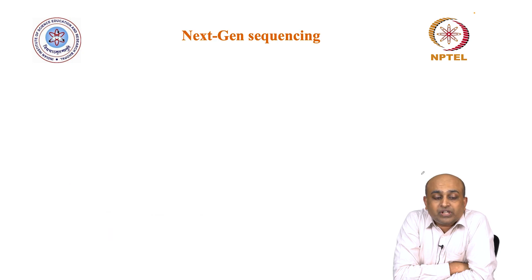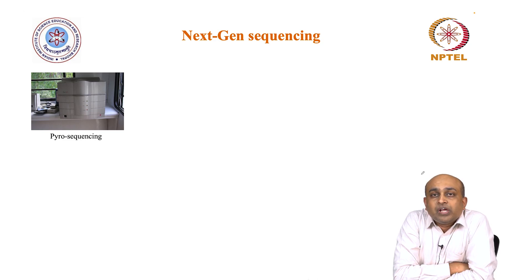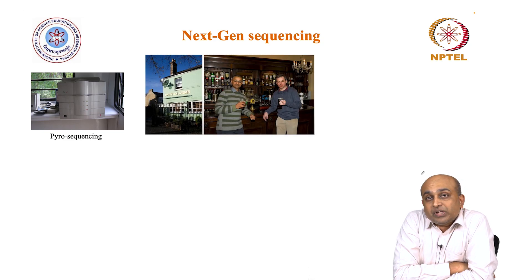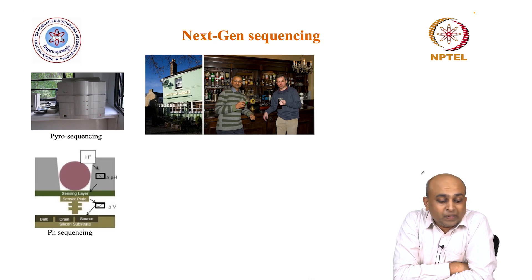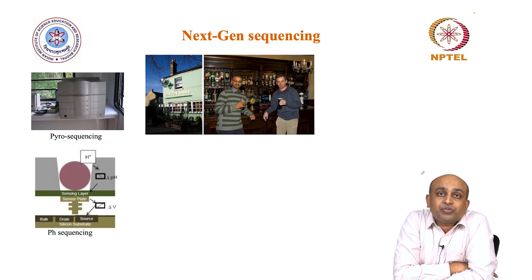Then we will get into some details of next-gen sequencing. We will look at pyrosequencing — what sequencing chemistry is involved — and how this changed in subsequent sequencing platforms. For example, how Illumina sequencing came together and how its chemistry was figured out. Then we will look at pH sequencing or Ion Torrent and see how its sequencing chemistry is somewhat similar to 454 but capitalizes on a different aspect.